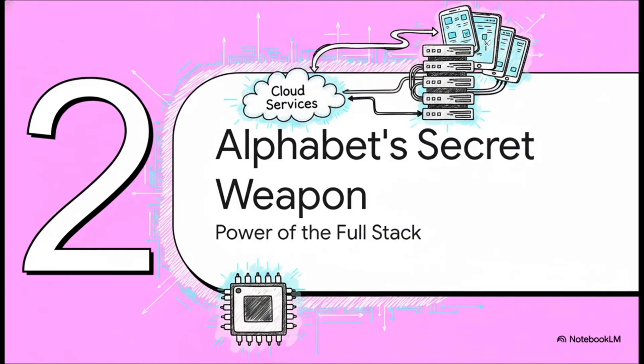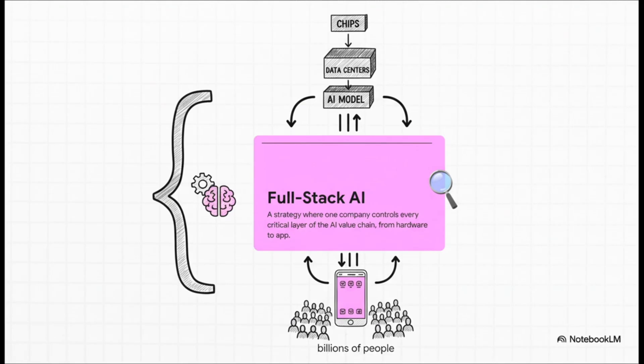Which brings us to Alphabet's secret weapon. The heart of this entire argument is that Alphabet's real, unbeatable advantage is its control over the entire technology stack. I'm talking from the tiny silicon chip all the way up to the screen that's in your hand right now. So what do we mean by full-stack AI? Well, think of it like this. It's vertical integration, but for the age of artificial intelligence.